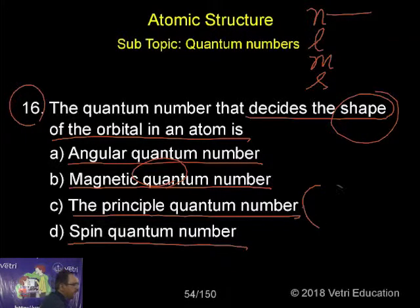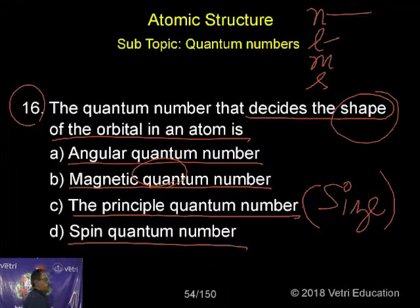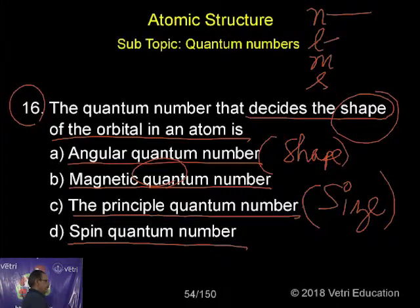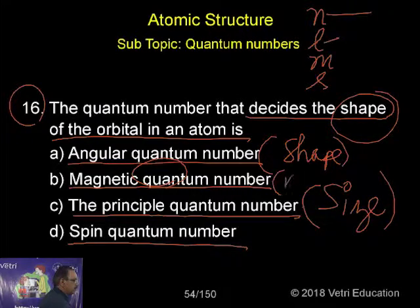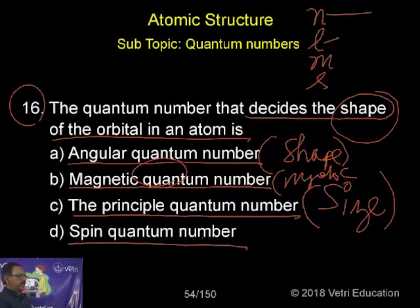The principal quantum number n gives information regarding size. The azimuthal or angular quantum number l gives information regarding shape. The magnetic quantum number m gives information regarding orientation of the orbital. The spin quantum number s gives information regarding the orientation of the electron.